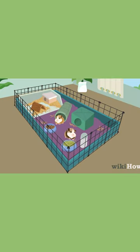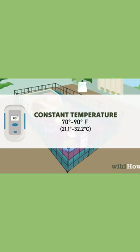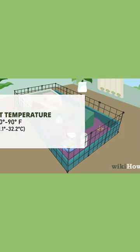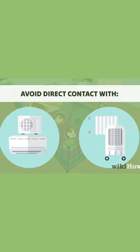Control the environment by maintaining a constant temperature between 70 and 90 degrees Fahrenheit, 21.1 to 32.2 degrees Celsius, and avoiding direct sources of heat or cold.